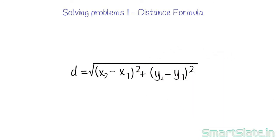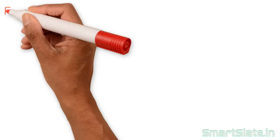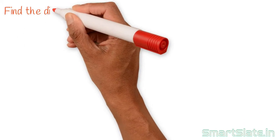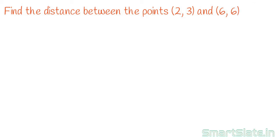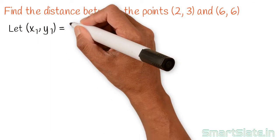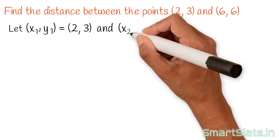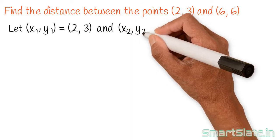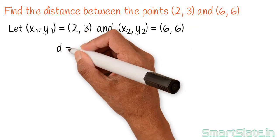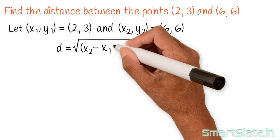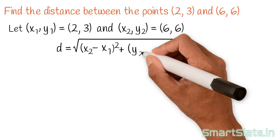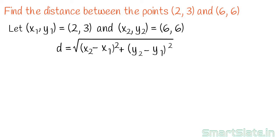Let's solve our first problem: find the distance between the points (2, 3) and (6, 6). Let x1, y1 equal 2 and 3, and x2, y2 equal 6 and 6. The distance formula is square root of (x2 minus x1) squared plus (y2 minus y1) squared. Replace x1, y1, x2, y2 with their respective values.